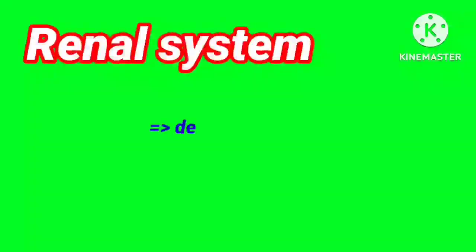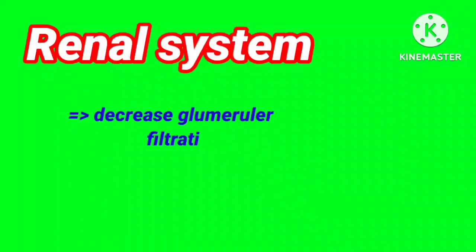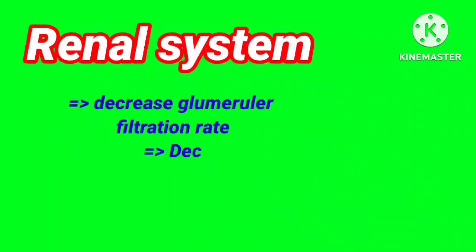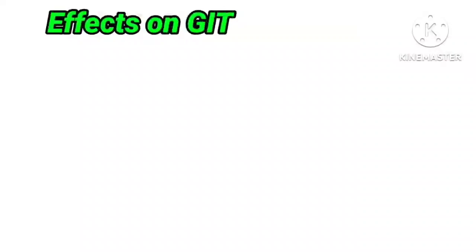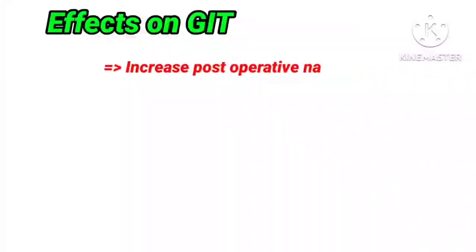Effects on the renal system: it decreases glomerular filtration rate and also decreases urine output. Effects on the GIT: it increases post-operative nausea and vomiting.